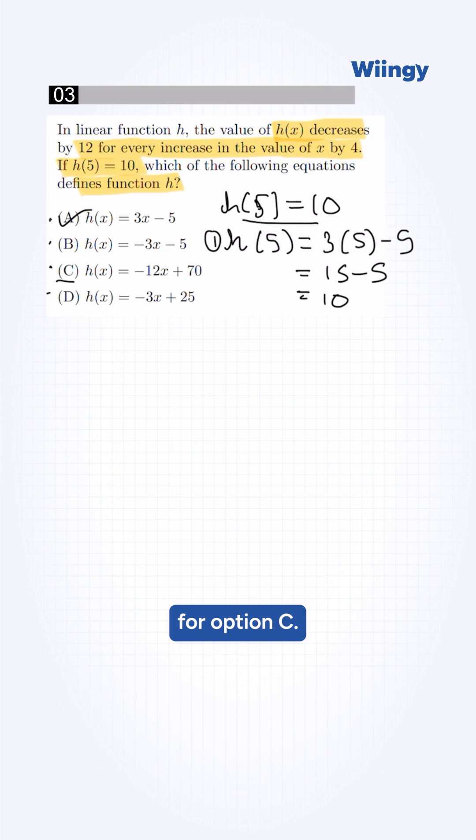Let's check option C. It will be -12(5) + 70. That's -60 + 70, which equals 10. This is also our answer. Our method is wrong.